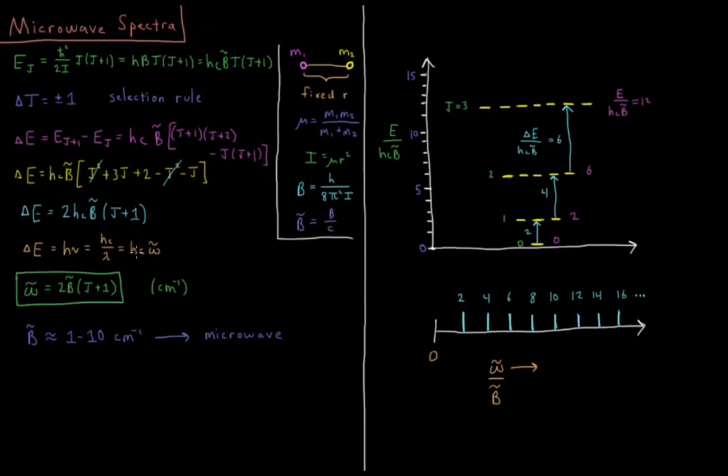This is the real reason that spectroscopists like this value b bar, because this Planck's constant times speed of light ends up canceling out when we do these equations here. When we set this equal to this, what we have is that the inverse wavelength of our photon that we absorb is 2 b bar times j plus 1. If we're going from j equals 0 to j equals 1, our energy is 2 b bar, or our wavelength of that photon is 2 b bar.